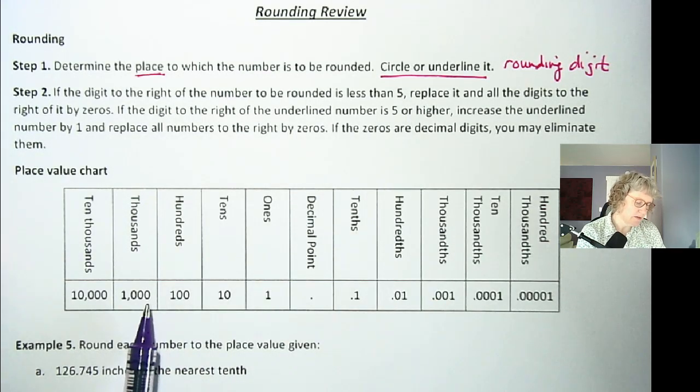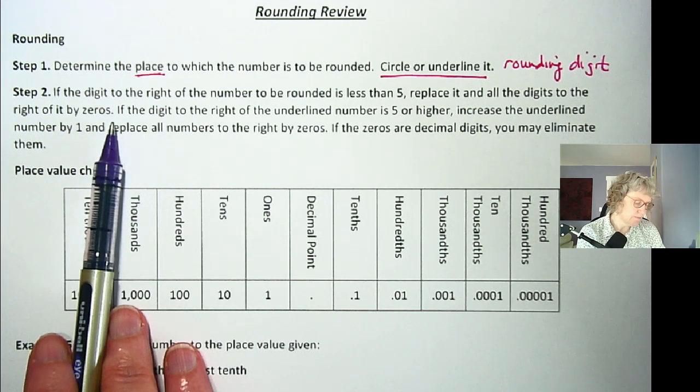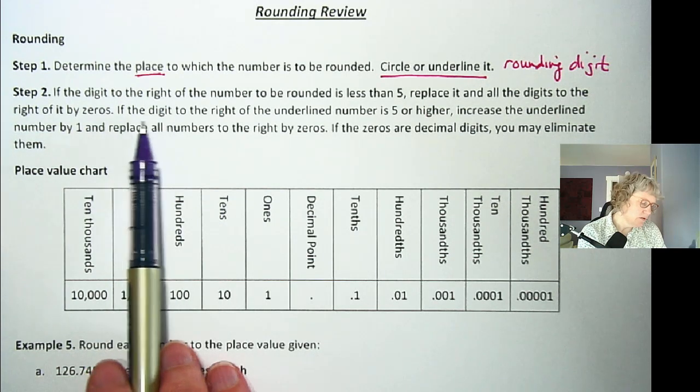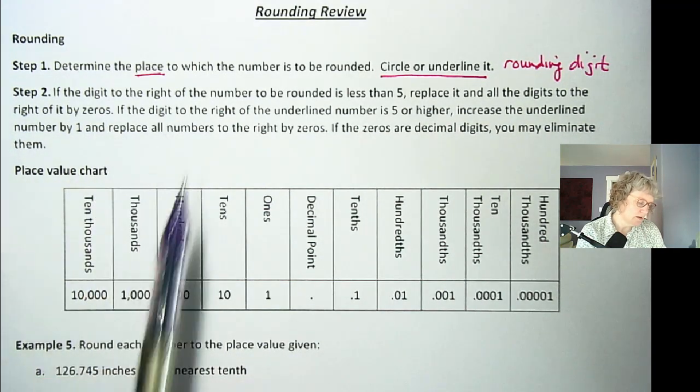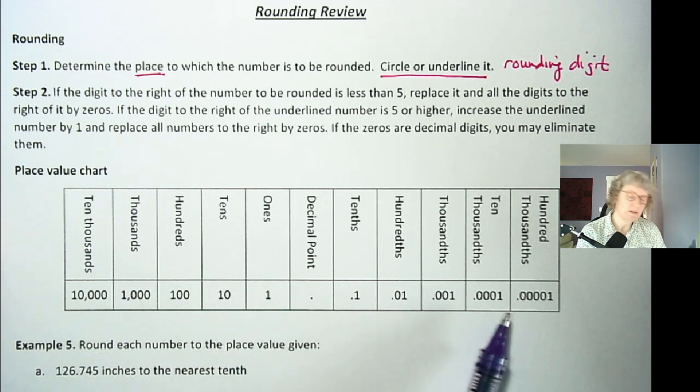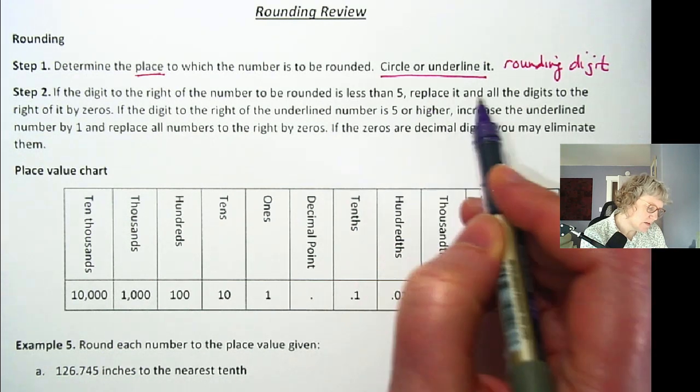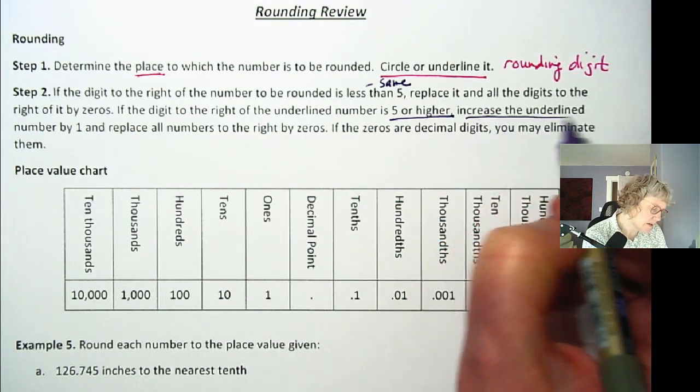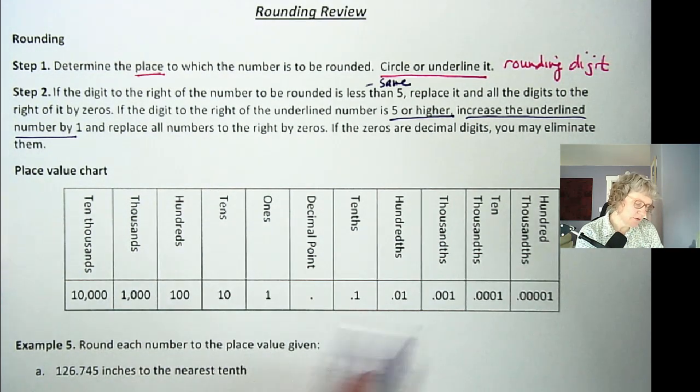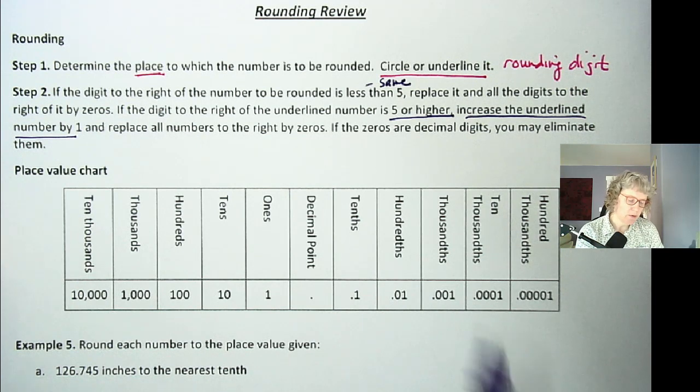It also depends if you're to the left of the decimal or to the right of the decimal. If we were rounding, let's say, to the hundreds, then we would replace any digits to the right by zeros. If they're after the decimal, we can delete them. If the digit to the right is five or higher, that's when we increase the underlined number by one. We need zeros if we're to the left of the decimal and not if we're to the right. So less than five, keep it the same. Five or higher, increase the underlined number. We either change to zeros or drop them if they're after the decimal place. Most of the time we will be rounding digits to the right of the decimal so we don't have to worry about the zero part.